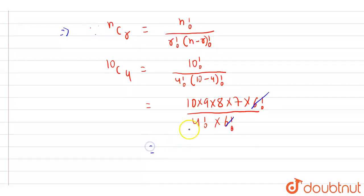Now let us simplify it. This will be 10 into 9 into 8 into 7 upon 4 factorial, which can be written as 4 into 3 into 2 into 1, right?